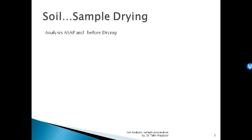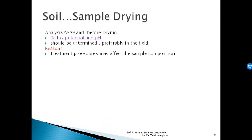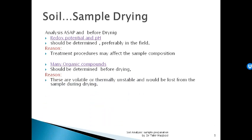Now there are some analyses that we can do before drying. We have discussed some examples. First of all, EH potential — the oxidation-reduction potential. Here you can see the sample composition and treatment procedure. The reason is that these compounds are volatile and thermally unstable and would be lost from the sample during drying, so you have to analyze them before drying.